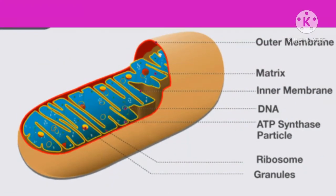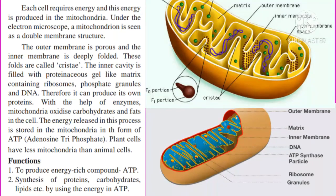Mitochondria: each cell requires energy and this energy is produced in the mitochondria. Therefore they are called the powerhouse of the cell. Under the electron microscope, a mitochondrion is seen as a double membrane structure. The outer membrane is porous — meaning it has holes — and the inner membrane is deeply folded. These folds are called cristae, as you can see in the picture.